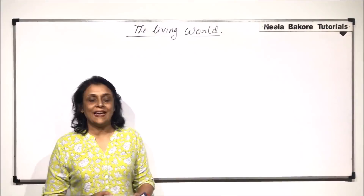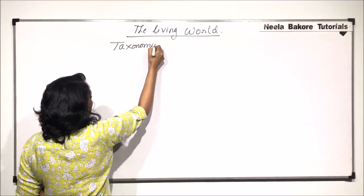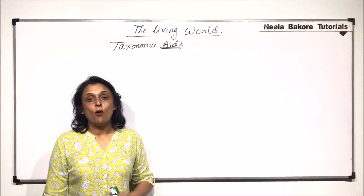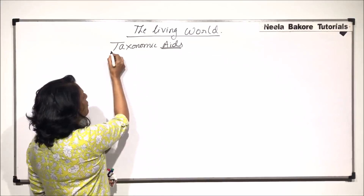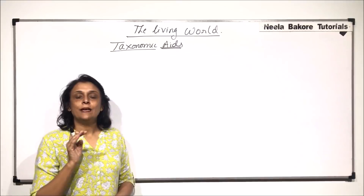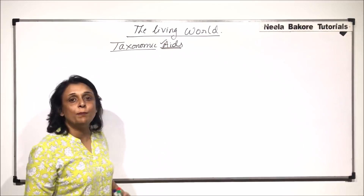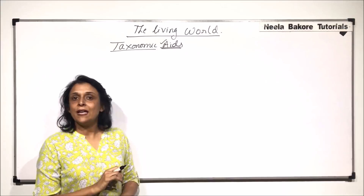In this video, we will talk about taxonomic aids. What exactly do we mean by taxonomic aids? A taxonomic aid is anything which is going to help us in the study of plants and animals or various species. When we talk of taxonomy, we mean we want to know the name of a plant, identify it, see its position and classification in the hierarchy. Anything which helps us in that study is known as a taxonomic aid.